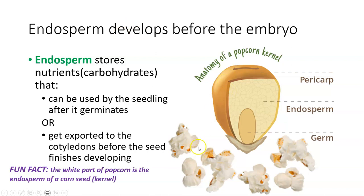Here is a diagram showing the anatomy of a popcorn kernel — the kernel is the dried seed of a corn plant. If you cut through it, you can see three main structures: the base, the germ, and then the majority of the kernel, which is the endosperm, and the outer covering is called the pericarp. A fun fact: when you pop the popcorn, all of the white part is actually the endosperm of the corn seed.